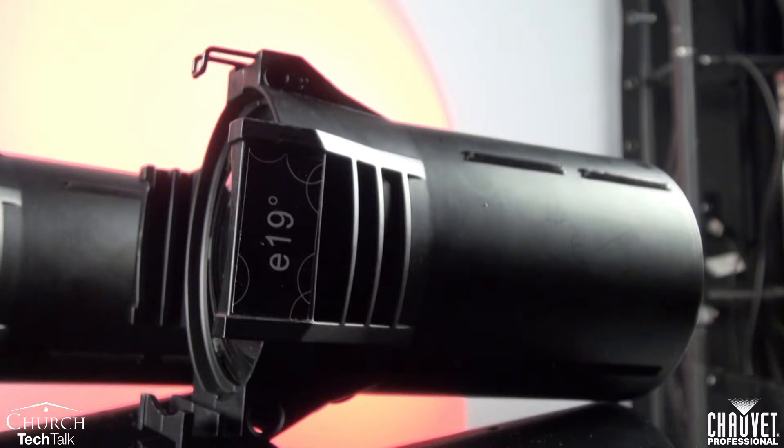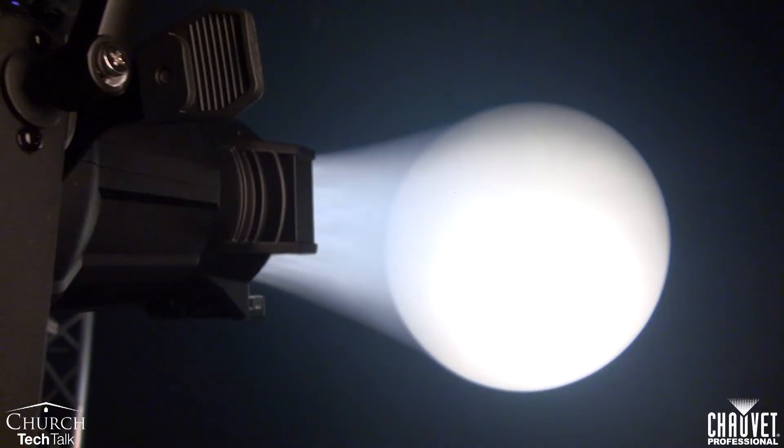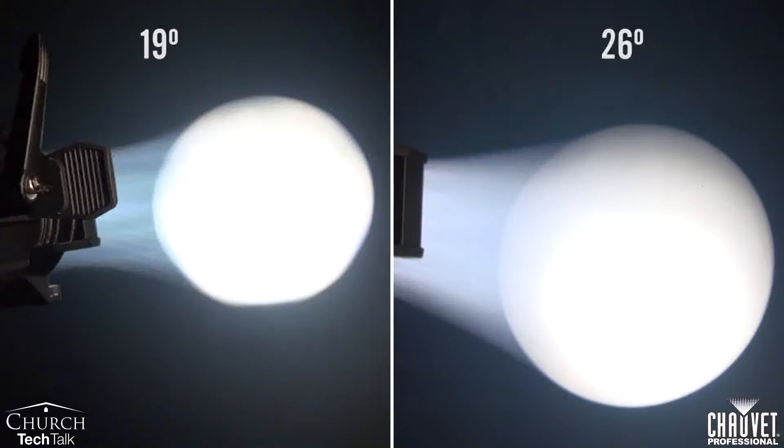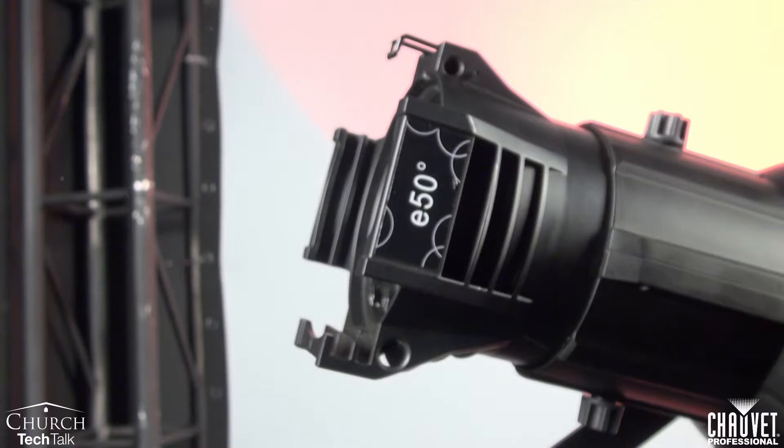First, here we have a 19 degree fixture and you can see that it's a fairly narrow beam. Our next beam spread is 26 degrees — it's a much wider beam and you can see it in comparison with the 19. Our next one is a 36 degree and it gets even wider. And then our last one is a 50 degree and it's the widest in this example. As you can see, your lens choice determines how wide the beam is going to spread and how much area you're going to light.